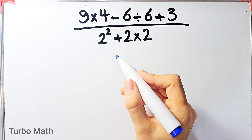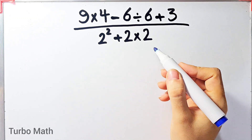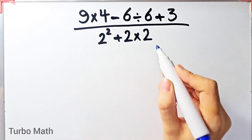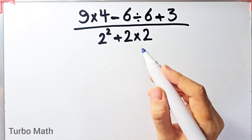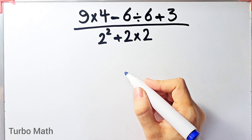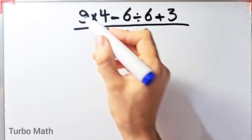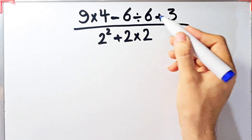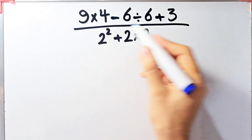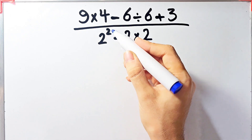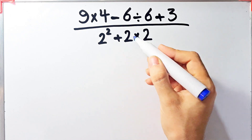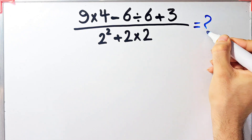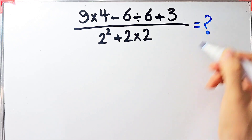Hi friends, welcome to Turbo Math channel. This question looks difficult at first, but if we go step by step we can find the correct answer. The expression is: 9 times 4 minus 6 divided by 6, then plus 3, all over 2 to the power of 2 plus 2 times 2. Can you solve this?